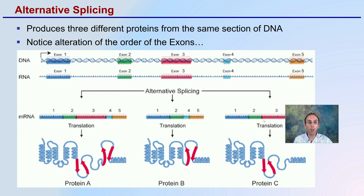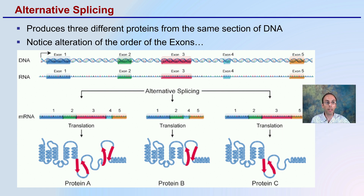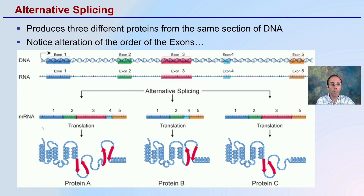Now, what does alternate splicing look like? Here we have a combination that produces three different proteins from the same section of DNA. Notice the alteration of the order of the exons — the exons are the coding regions. In this case we have five exons. Here we have the RNA with five exons and also the introns. In protein A, we have them in exon order 1, 2, 3, 4, 5 — this is how it's presented.